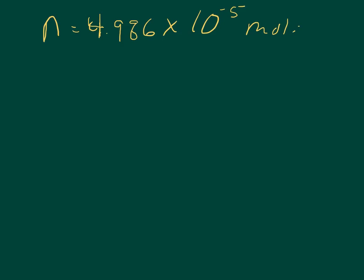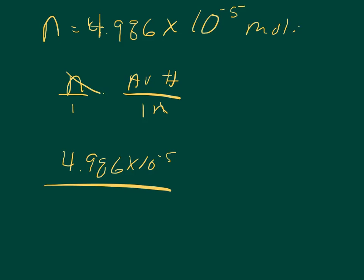And this wants the answer in an atom. So if we know that moles over 1 times that by the number of molecules in a mole, the Avogadro's number, Avogadro's number over 1 mole, our moles cancel out. So if we take our 4.986 times 10 to the negative 5th moles over 1 times 6.022 times 10 to the 24th molecules per mole, our moles cancel out.